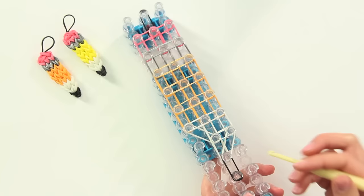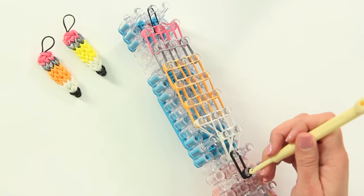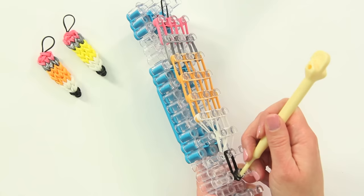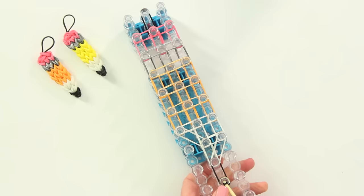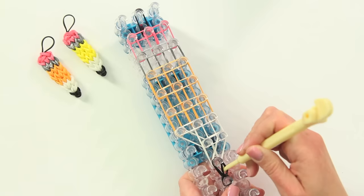Starting where that black band was wrapped around four times, we're going to reach in with our hook, and pull back on those bands, and bring those two black rubber bands forward.